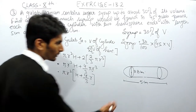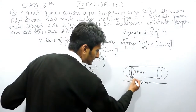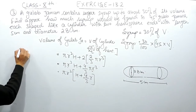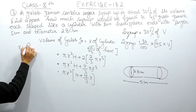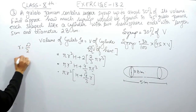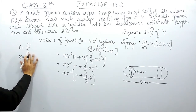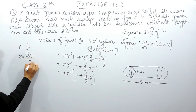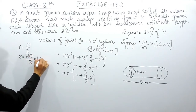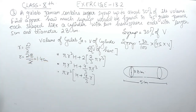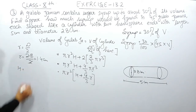Now I need the value of r. The complete diameter is given as 2.8 centimeters, and the radius is half of the diameter. So the radius equals half of 2.8, which is 1.4 centimeters.